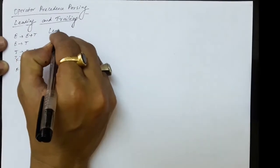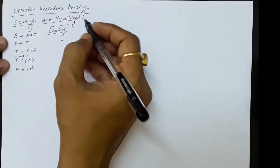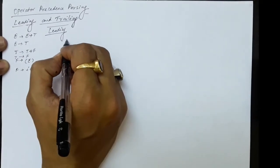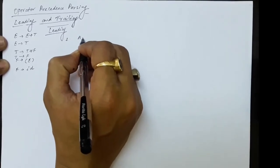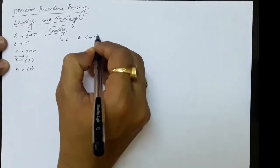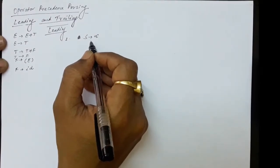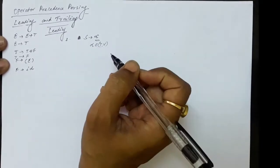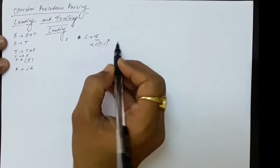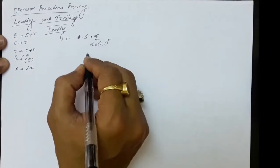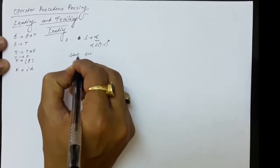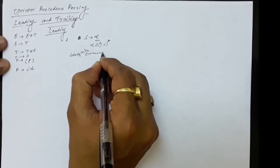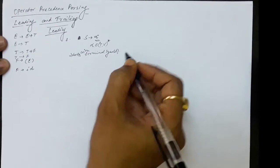Now we are going to compute the LEADING for this given grammar. What actually is LEADING? Suppose we have a production of kind A produces alpha, where alpha is a collection of terminals and non-terminals. If alpha starts with a terminal symbol, that terminal symbol will be included in the LEADING of A.